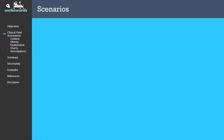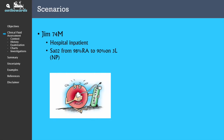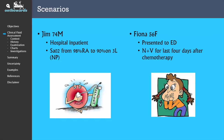I'll be going through the fluid assessment in the context of two hypothetical scenarios. The first is Jim, a 74 year old male who is a hospital inpatient. The nurses report that the oxygen saturations have decreased from 98% on room air to 90% on 3 litres of oxygen via nasal prongs. The second case is Fiona, a 56 year old female presenting to the emergency department with four days of unrelenting nausea and vomiting since receiving a cycle of chemotherapy.